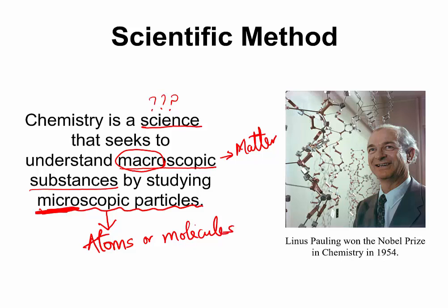But there is still a very big question here. Chemistry is a science. So, what is science? Science is a body of knowledge. And this is Linus Pauling, who won a Nobel Prize in Chemistry in 1954. He was a scientist.